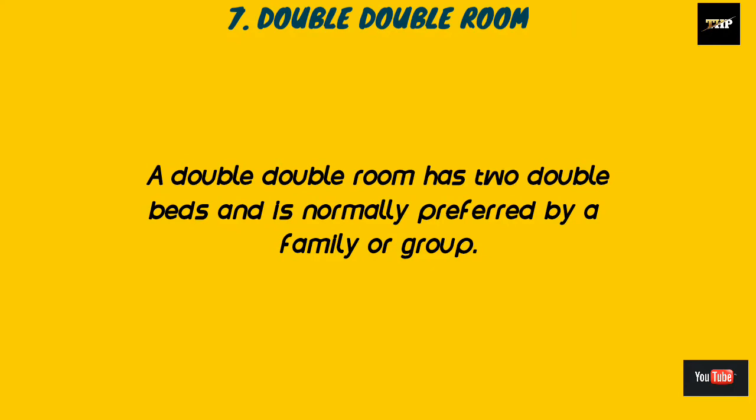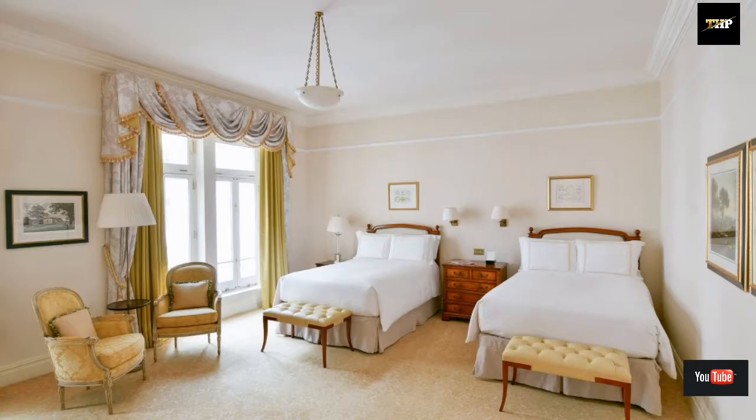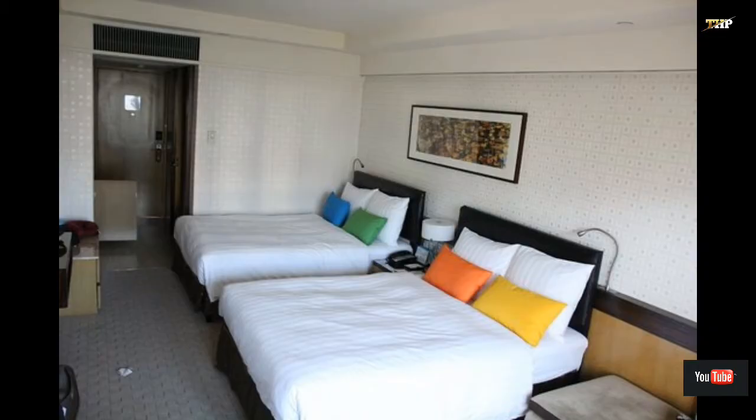The next one is the double double room. A double double room has two double beds and is normally preferred by a family or a group. A double double room can accommodate four persons. Here are some images of the double double bedroom.